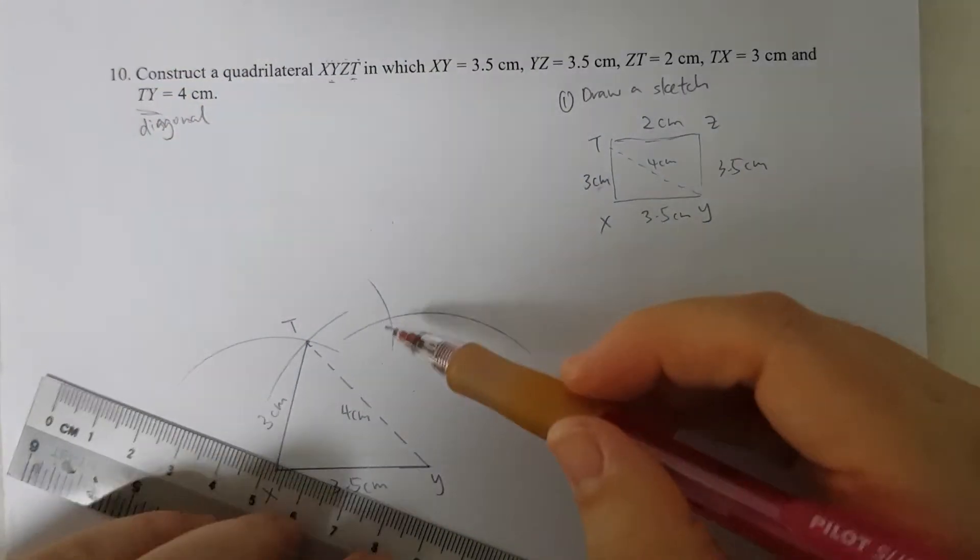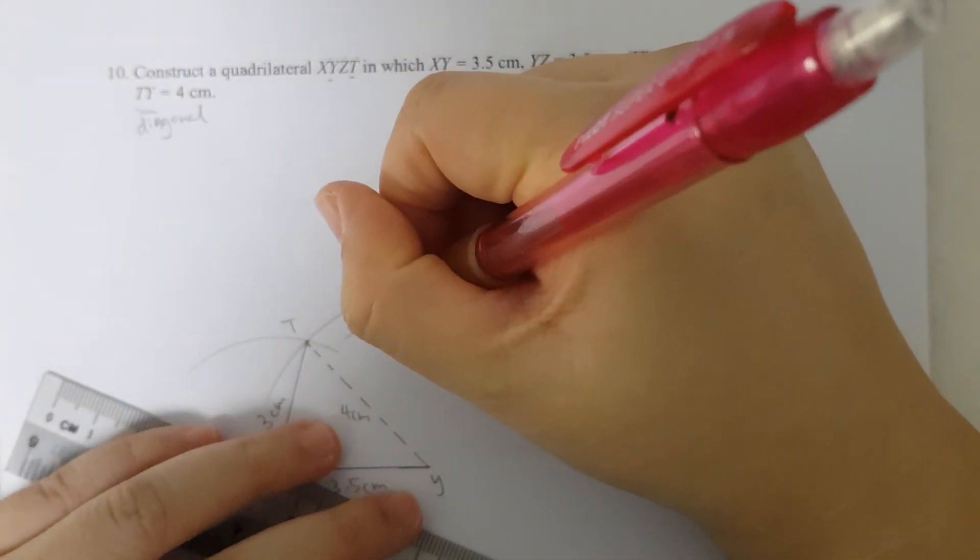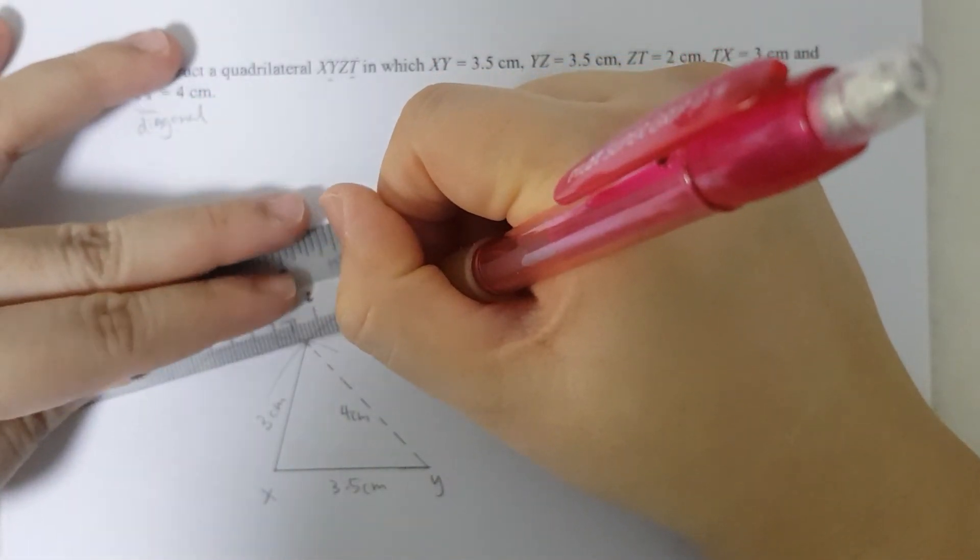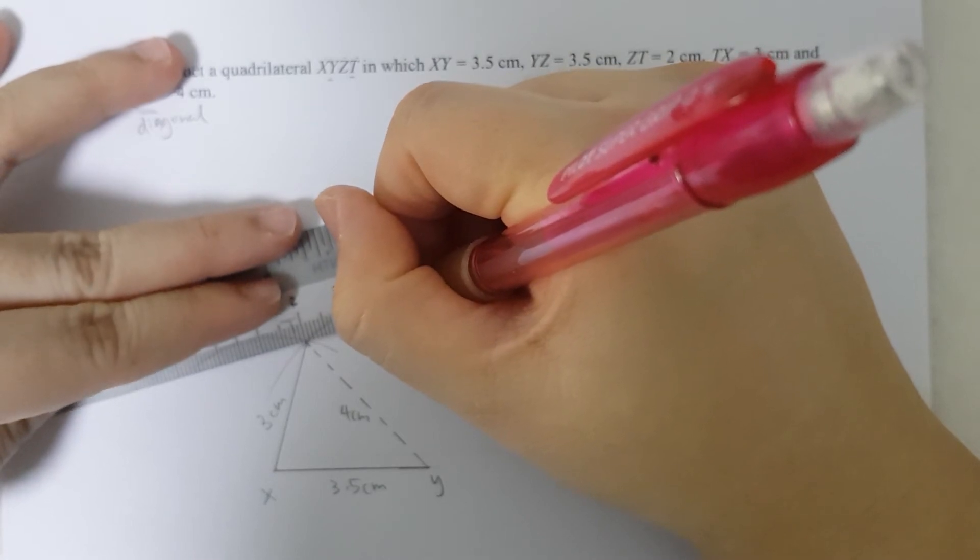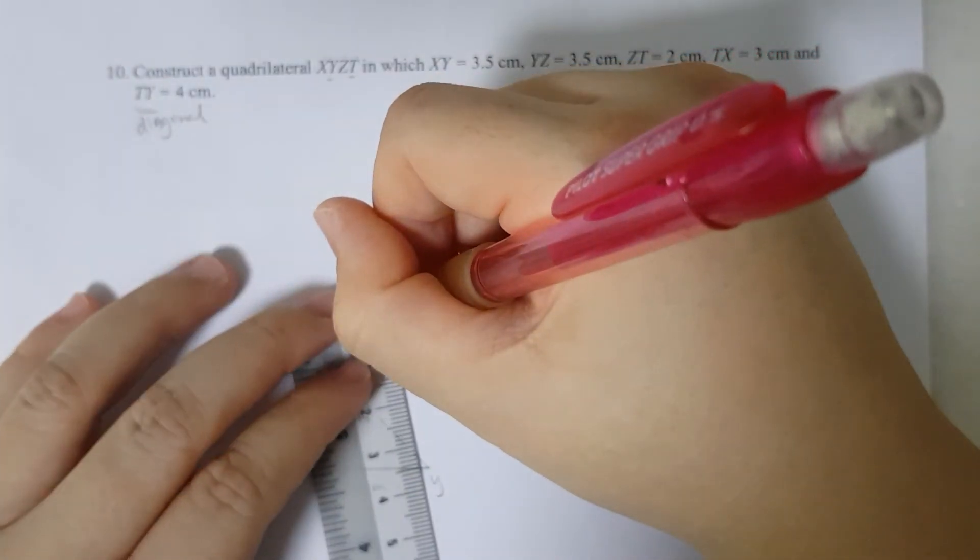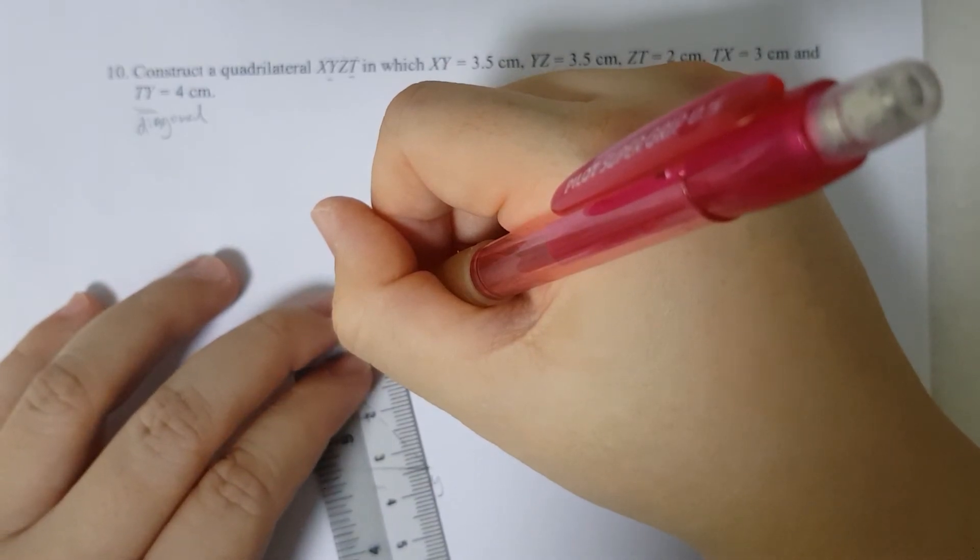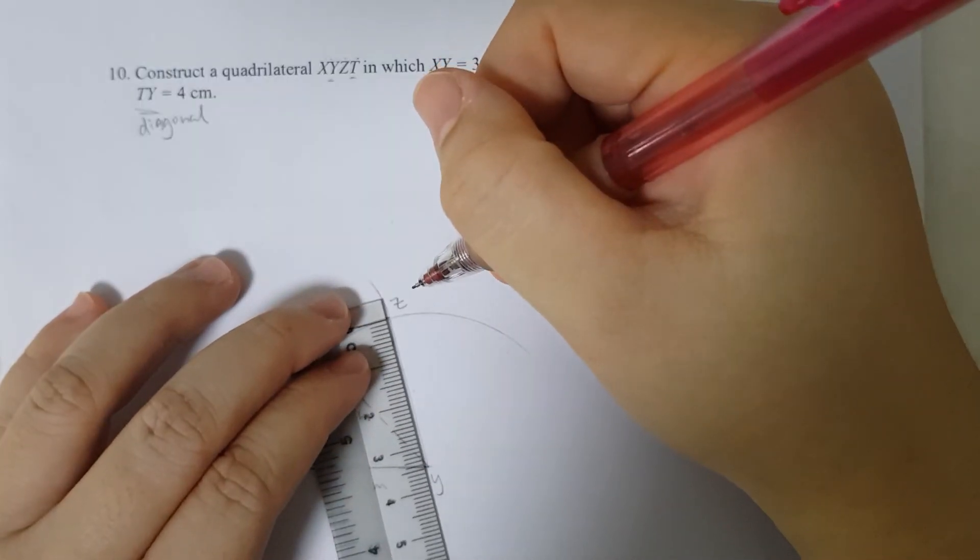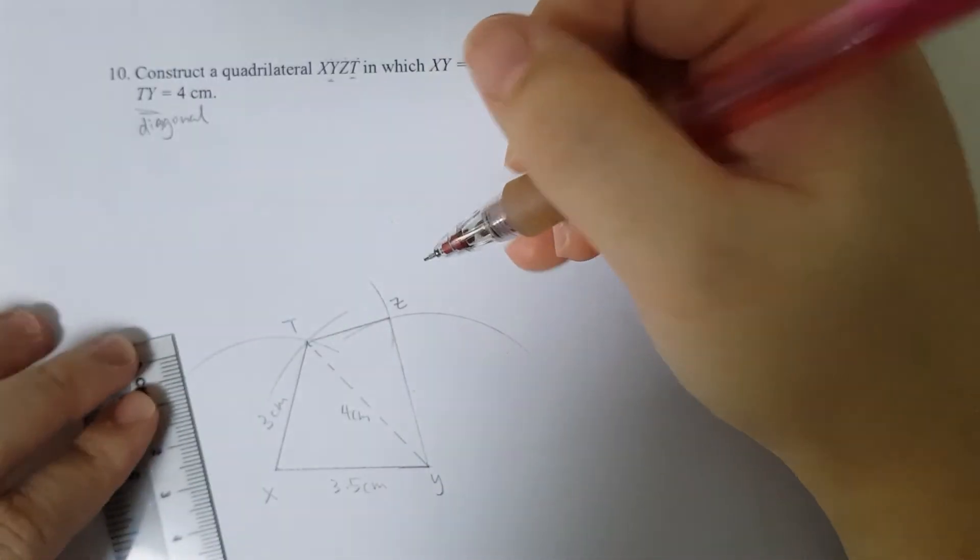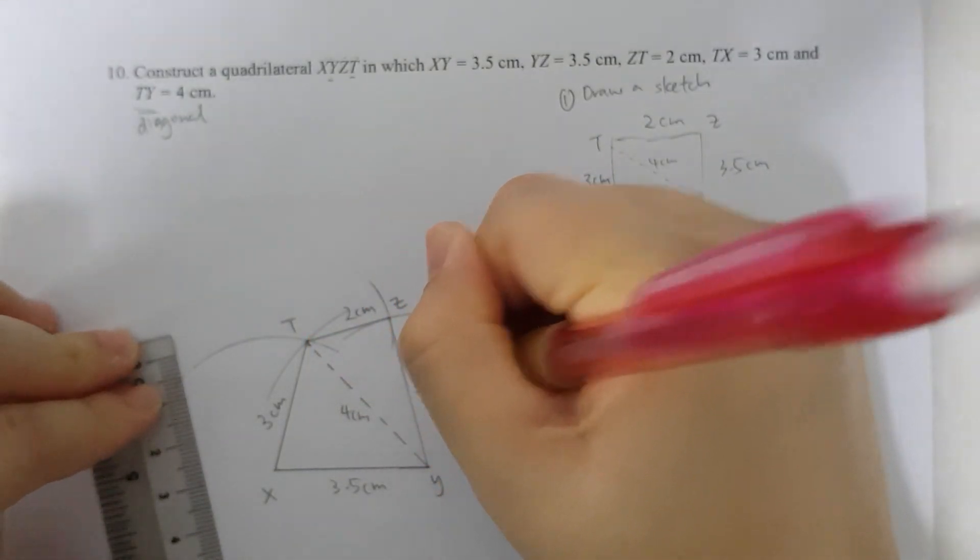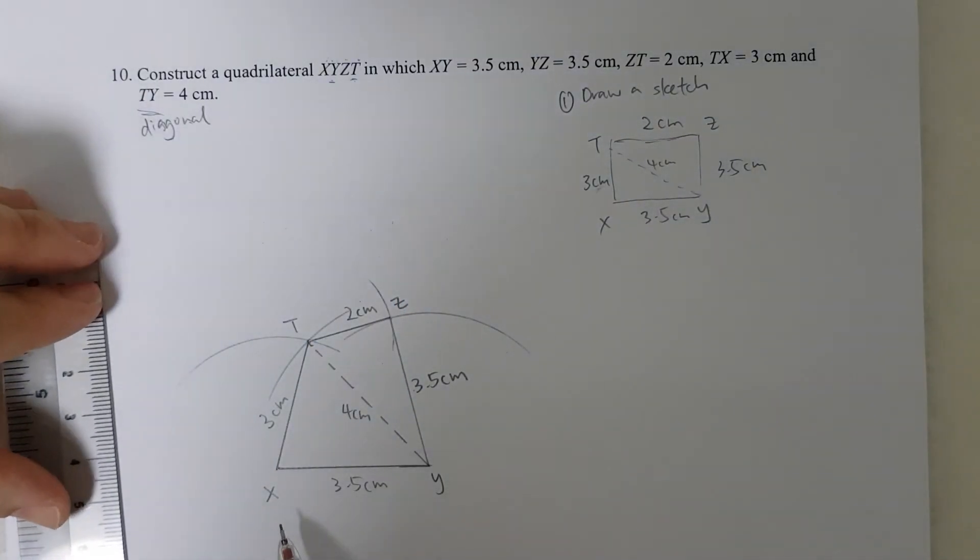And where the two arcs intersect, that is my point Z, where I have TZ is 2cm and I have YZ is 3.5. So there you go. I have my quadrilateral X, Y, Z, T.